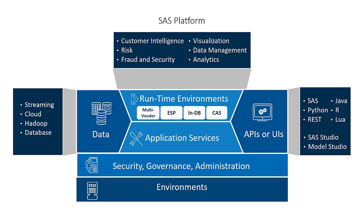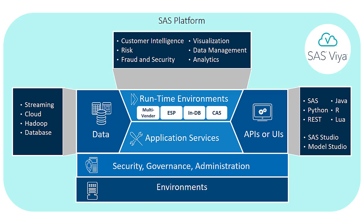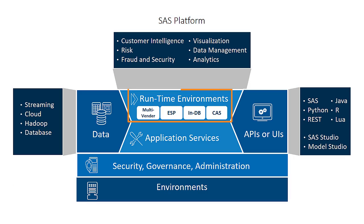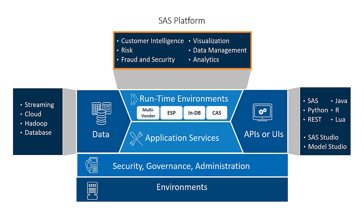This conceptual diagram shows the architecture of the SAS platform. Because SAS Viya is part of the SAS platform, all of these components and features are available in SAS Viya. The runtime environments are shown in the center. Data sources are on the left. At the top are categories of SAS solutions and products that are built on the platform. To the right are the various APIs and user interfaces that feed into the platform.